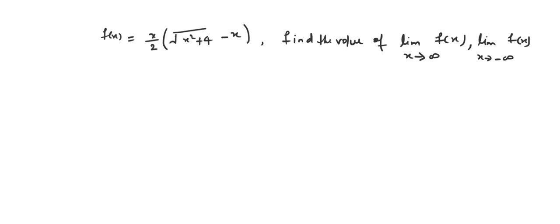Hello friends. In this video, we will try to find the limit of the function f, defined as x over 2 times the quantity root over x squared plus 4 minus x, as x goes to positive infinity and as x goes to minus infinity. We want to try to find the limit of this function.